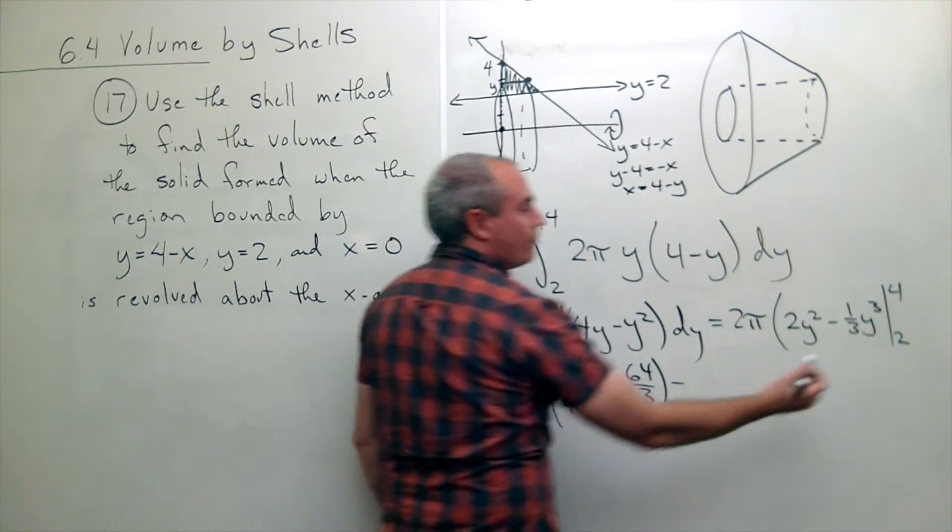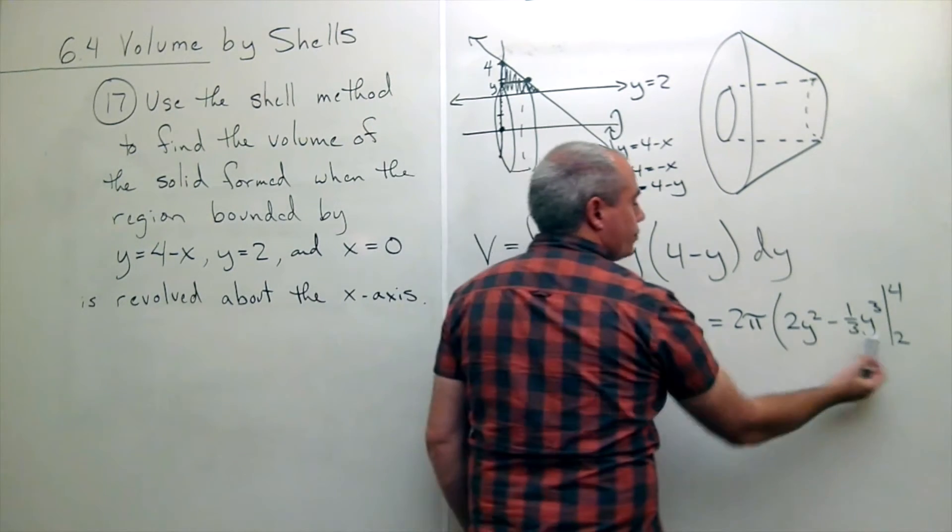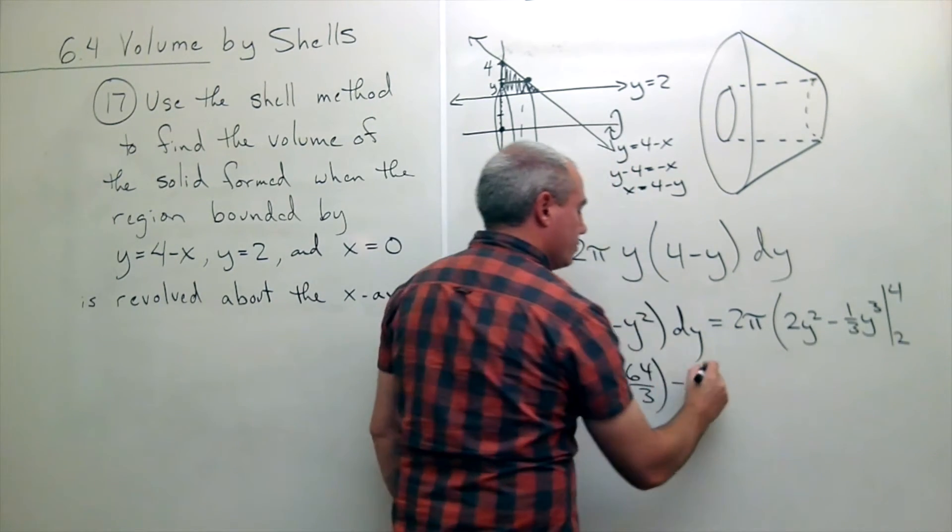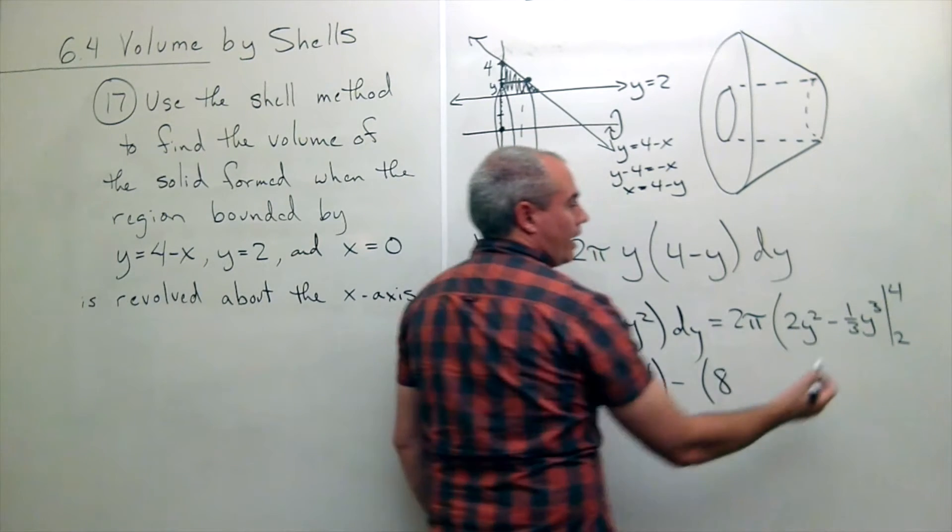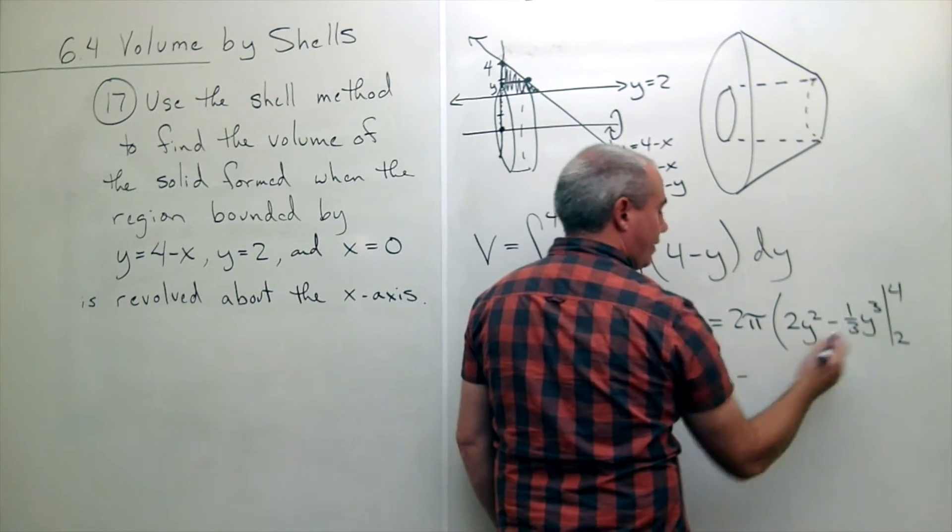Minus, now I plug in the two. Two squared is four times two is eight. And minus, plug in the two, I get eight-thirds.